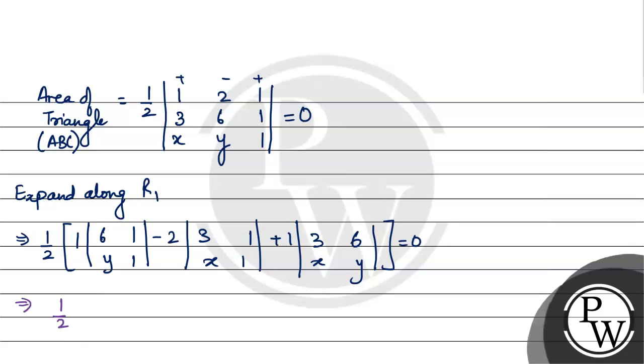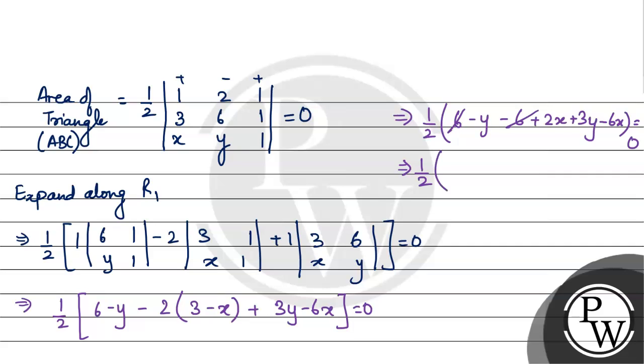This further implies half multiplying: 6 minus y minus 2 multiplied by (3 minus x) plus 3y minus 6x. This further implies 6 minus y minus 6 plus 2x plus 3y minus 6x equals 0. So 6 and 6 cancel. This implies half multiply: minus y plus 3y gives 2y, plus 2x minus 6x is minus 4x, equals 0.